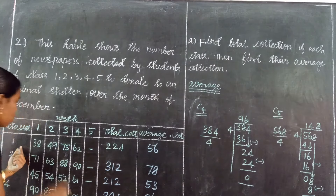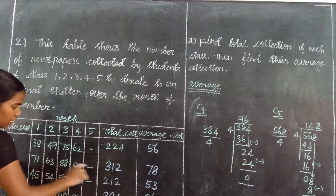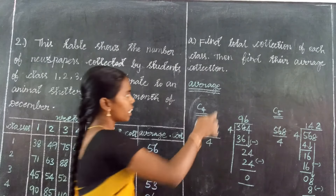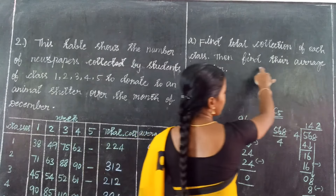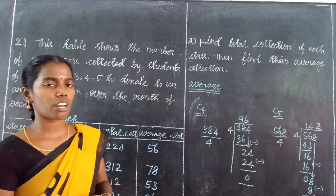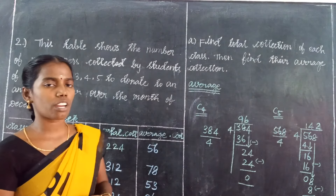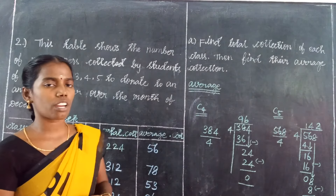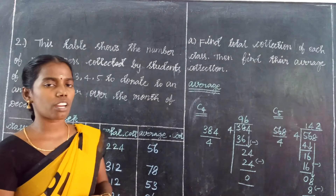So in this problem, we found the total collection of each class — Classes 1 to 5. We added the values for each class, then found the average of the collections by dividing the total items by the number of items. Average equals total collection divided by number of items. Thank you, students.